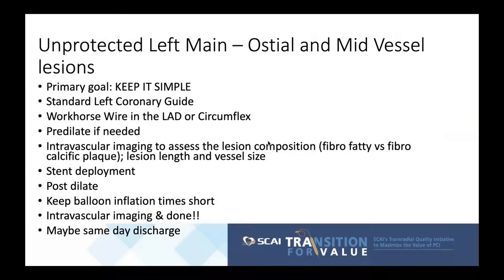The goal of this procedure is to keep it simple — in, out, and done. Use your standard left coronary guide and a regular workhorse wire, placed preferably in the LAD or circumflex. Predilate if needed, followed by intravascular imaging to describe the lesion composition — whether fibro-fatty or fibro-calcific plaque — and determine if further plaque modification is needed. Then assess lesion length and select an adequately sized stent.